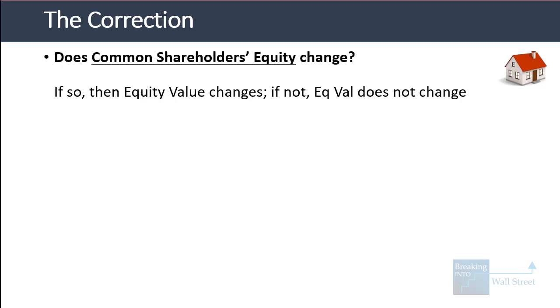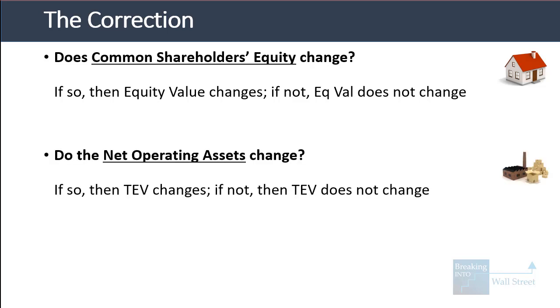As a result, the overall rules are: number one, does common shareholders' equity change? If it does, equity value changes; if not, equity value does not change. And two, do the net operating assets change? If they do, total enterprise value changes; if not, enterprise value does not change.